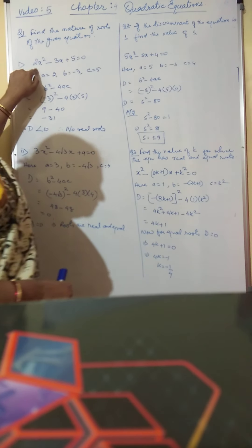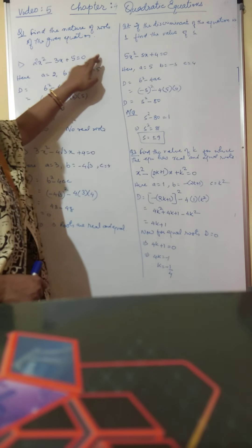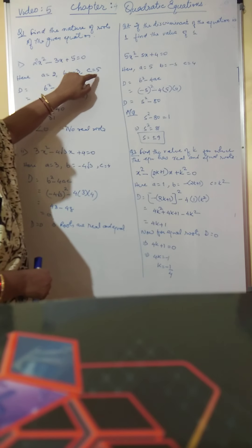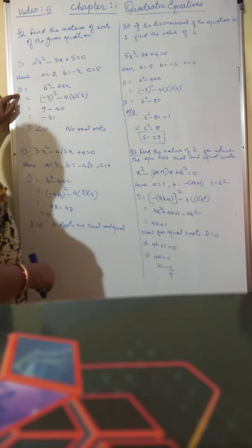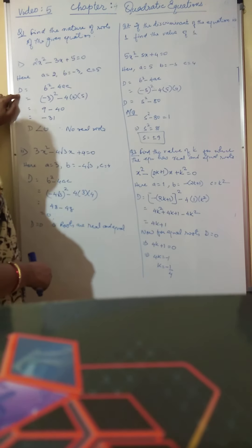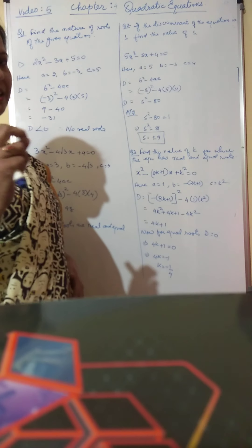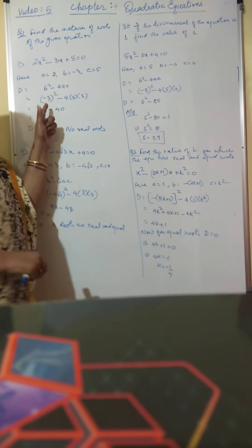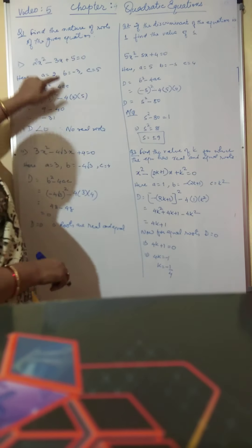The first question is 2x² minus 3x plus 5 equal to 0. Here the value of a is 2, b is minus 3, and c is 5. We first find the value of D. D is equal to b² minus 4ac. Substituting the values: minus 3 squared minus 4 into 2 into 5, we get 9 minus 40, which is equal to minus 31.